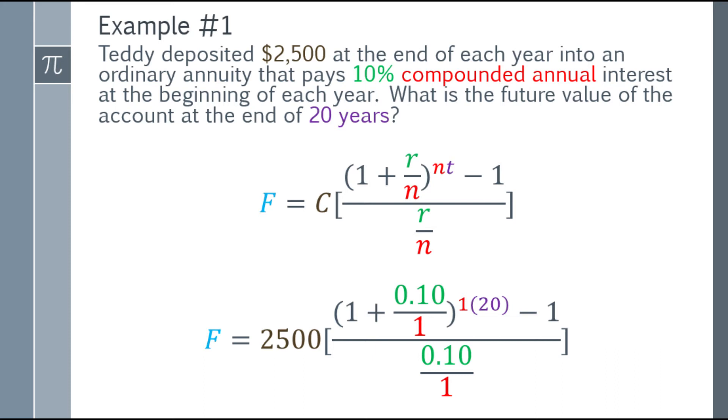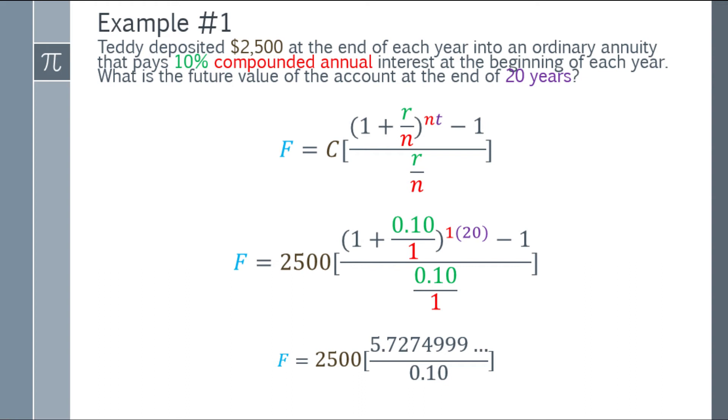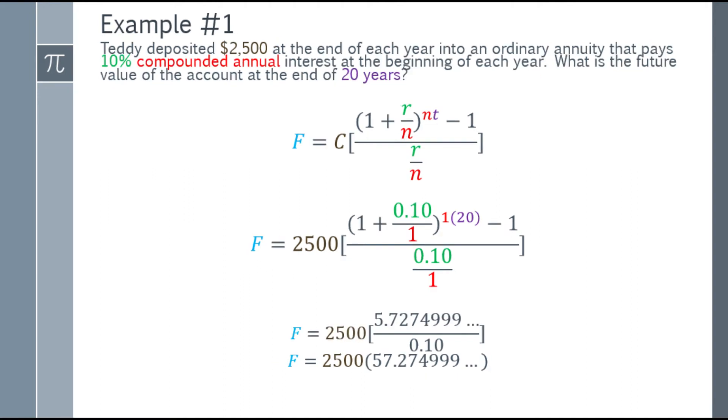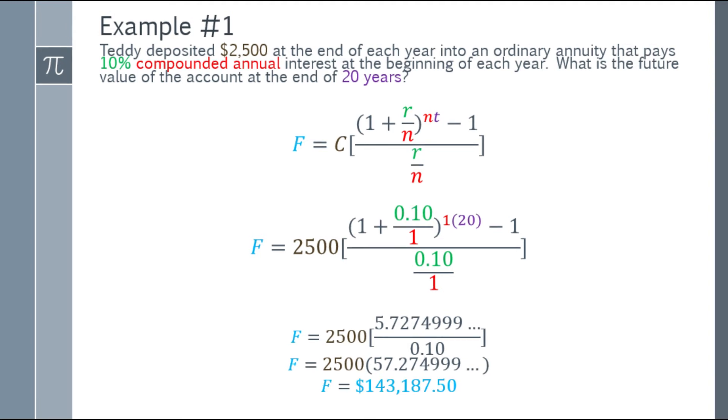Simplify it further. For the numerator, 0.10 over 1, add 1, raise to the power of 20, then subtract 1. The answer is 5.7274999 and so on. For the denominator, 0.10 over 1 equals 0.10. Divide the numerator by the denominator: 57.274999 and so on. Lastly, multiply by 2,500 and you get 143,187.50.